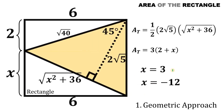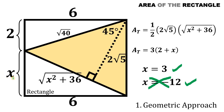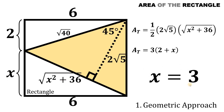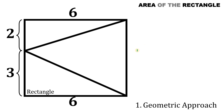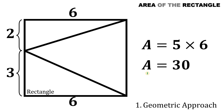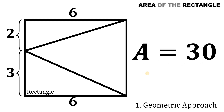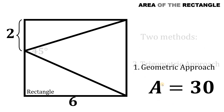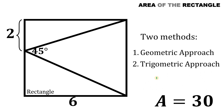Going back to our figure, x = 3 or x = −12. But x cannot be negative because x is a side length. Therefore x = 3. Since we know the value of x, we can now get the area of this rectangle. This is just 6 times 5, so the area of this rectangle equals 30 square units. That is our answer. Using the geometric approach, the area of this rectangle equals 30 square units.